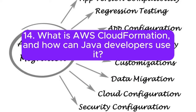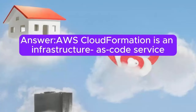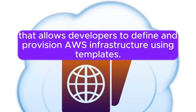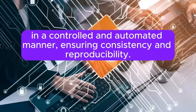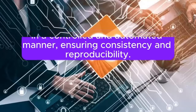Question 14: What is AWS CloudFormation and how can Java developers use it? AWS CloudFormation is an infrastructure-as-code service that allows developers to define and provision AWS infrastructure using templates. Java developers use CloudFormation to create, update, and delete AWS resources in a controlled and automated manner, ensuring consistency and reproducibility.